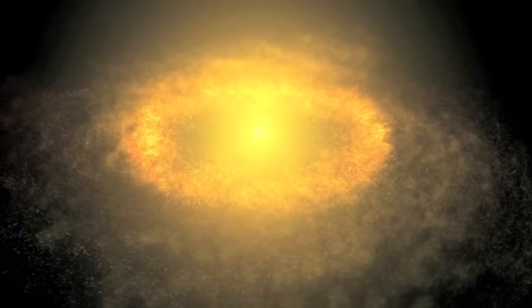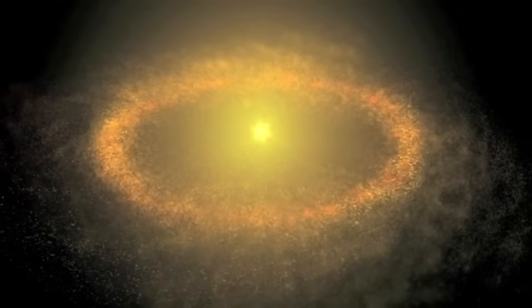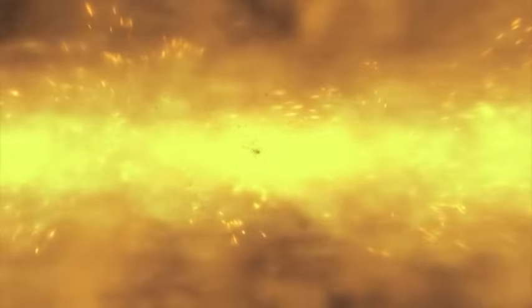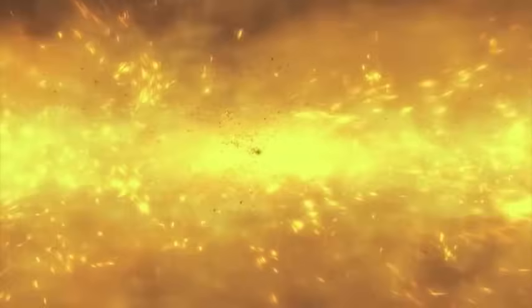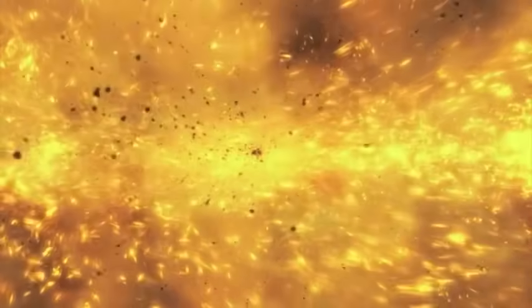As the sun ignited it gave off a huge blast of solar wind, a radioactive gust of energy. This blew all the remaining dust and gas that was left over from the nebula, out to the edge of the solar system, which is why everything is nice and orderly today.